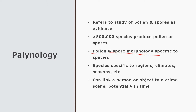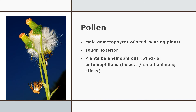The pollen and spore morphology — the shape of the pollen and spores — is specific to species. You have all these different kinds of plants and fungi releasing spores and pollen into the atmosphere, and each one is specific to the species it came from. If you can look at the pollen and spores, you can see what it came from, when that organism releases pollen during the year, where it lives, and you can characterize the places that a piece of evidence might have come and gone.